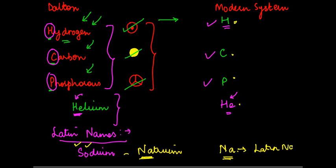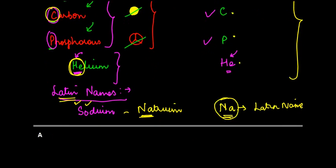So just to summarize, in the modern system, we either use the first alphabet, or we use the combination of first two alphabets, or we also use either the first one or both of them for the Latin names of the element.